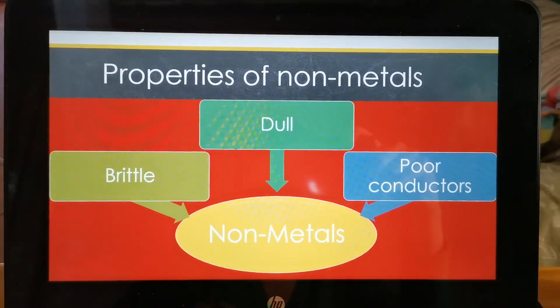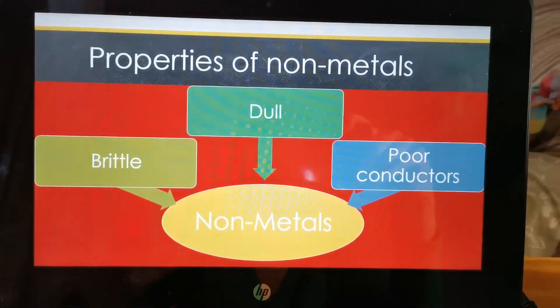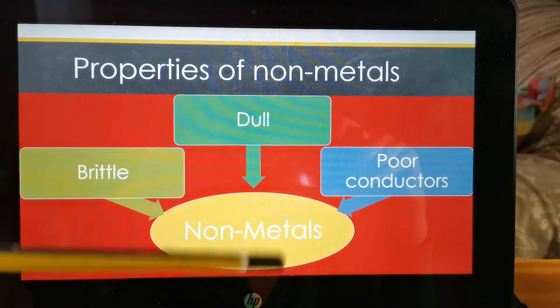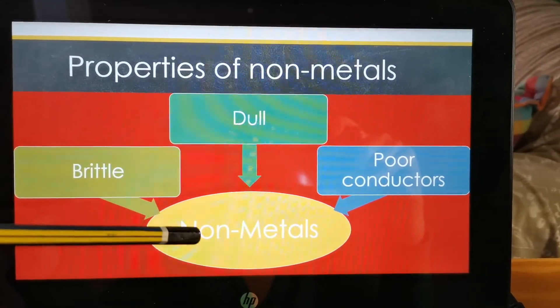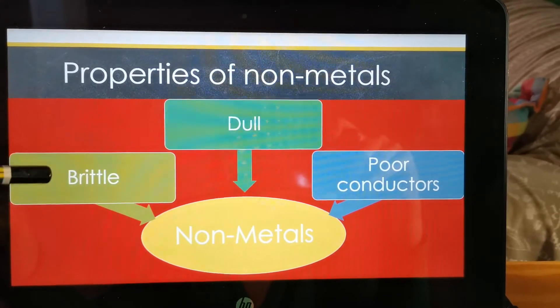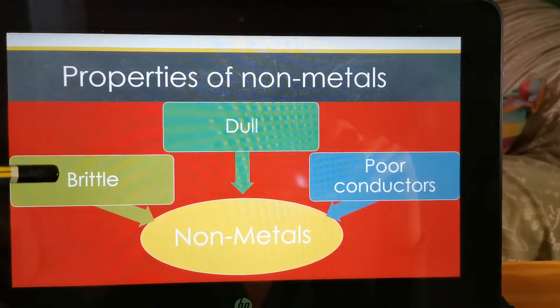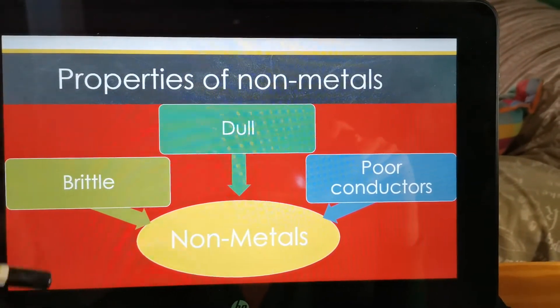Let's quickly look at the properties of non-metals. It's almost the opposite of metals. So, a non-metal is brittle. Brittle means when something breaks easily. It shatters. So, if you think about a metal, is a metal brittle? No, a metal is hard and strong. But a non-metal is brittle.